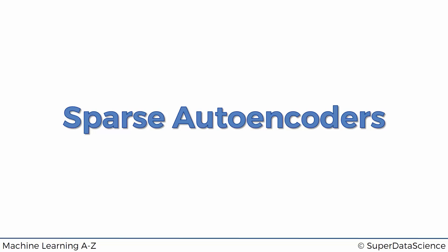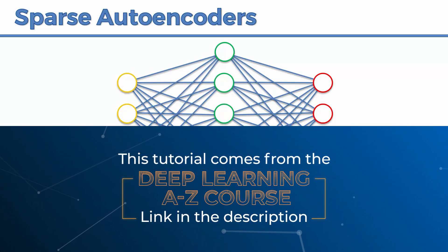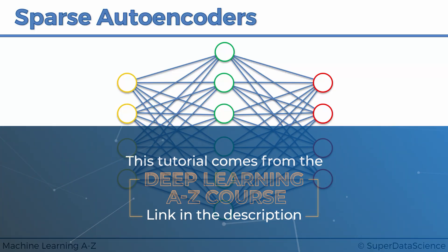Hello and welcome back to the course on deep learning. Today we're talking about sparse autoencoders. As we previously discussed, we are aiming to create an autoencoder where the hidden layer is actually greater than the input layer.